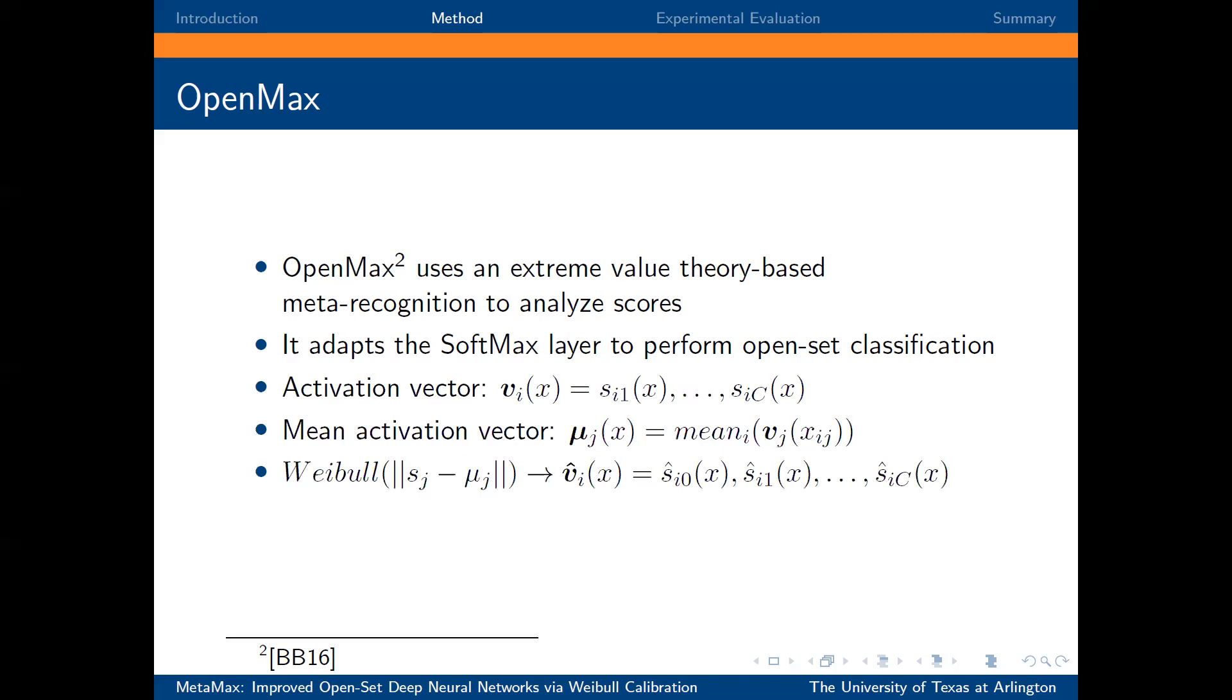The Weibull model is further used to compute revised activation vectors that include the probability of being from unknown classes. Therefore, OpenMax provides an explicit rejection option when the unknown class has the largest probability.